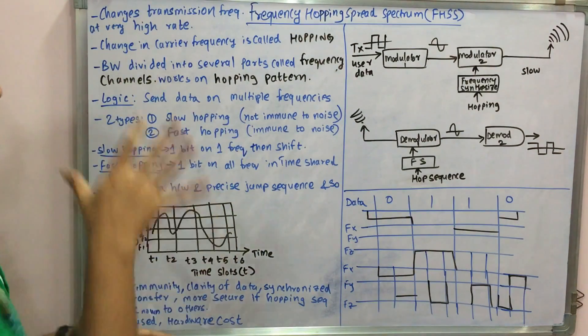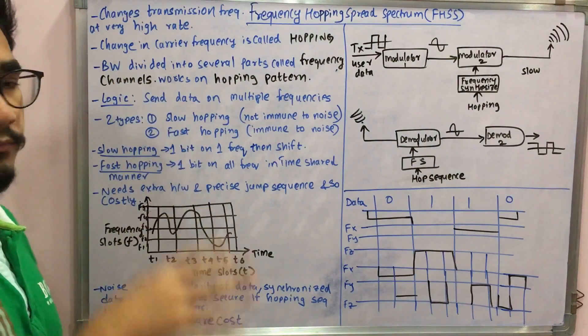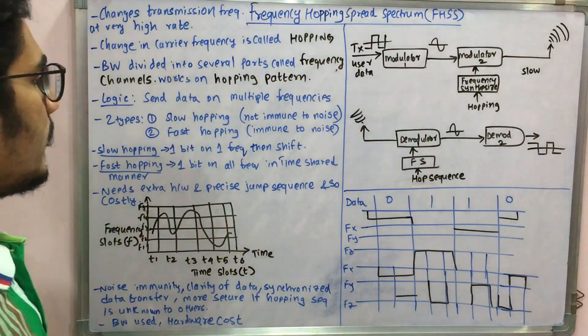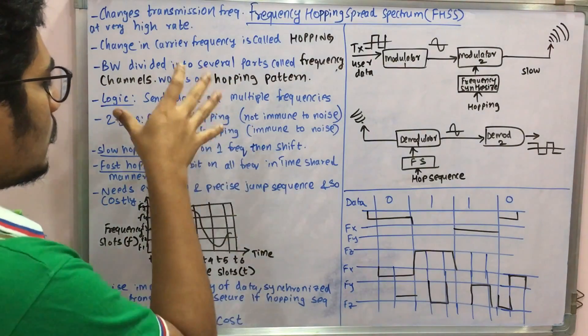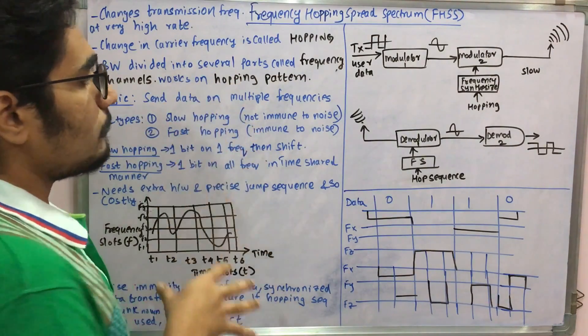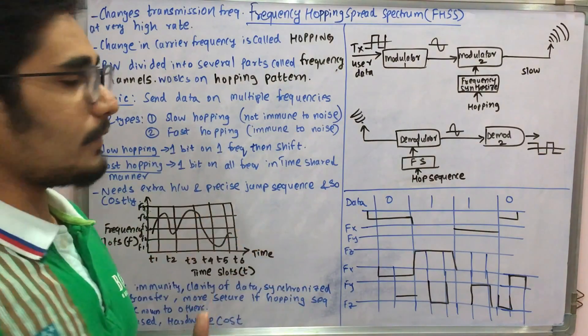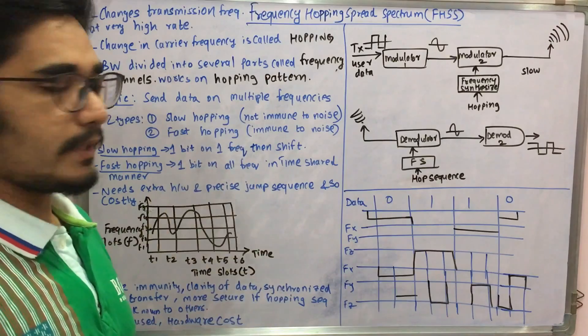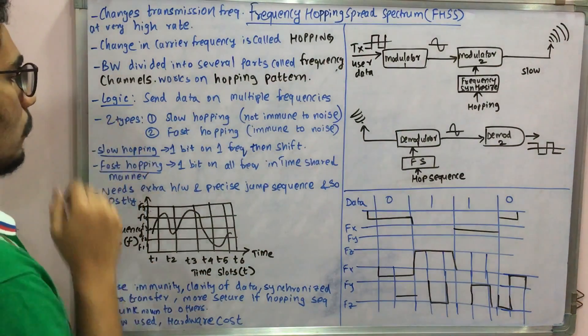The logic is to send data on multiple frequencies. There are two types of frequency hopping: slow hopping, which is not immune to noise, and fast hopping, which is immune to noise. We generally don't prefer slow hopping, but fast hopping is preferred because of the immunity to noise.